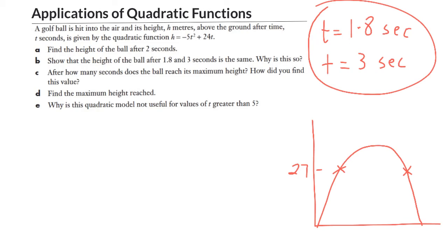Now, if we take any two values for x, or here t, that produce the same y value, or the same height in our case, that means they're the same distance from this line of symmetry here. And that line of symmetry is our time when our max occurs, our t max.